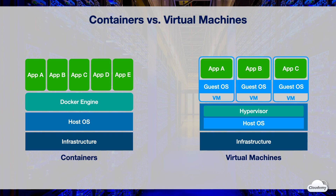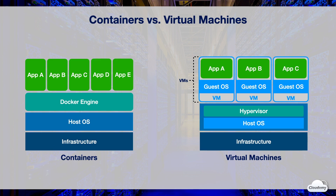A typical VM architecture contains a hypervisor running on top of a host OS, which is installed directly on top of the physical infrastructure. The hypervisor is a virtualization layer that separates applications from the physical layer. On top of the hypervisor, you can create VMs with a guest OS, such as Linux or Windows. Each VM acts like independent virtual hardware. You can deploy applications into these VMs, and VMs allow multiple OS instances to run on a single hardware, helping optimize physical resources and increase scalability and availability.